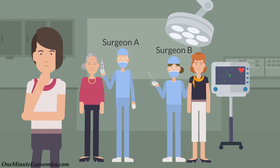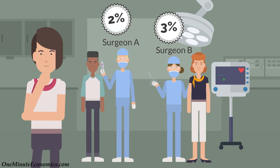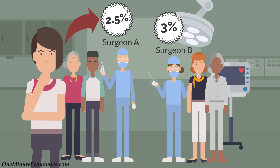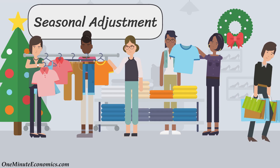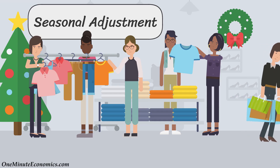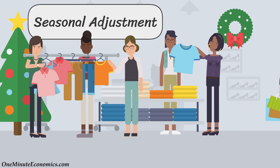What if surgeon B only accepts young patients whereas surgeon A generously accepts anyone? Believe it or not, surgeon A's death rate might actually be lower than surgeon B's for young people, but because he also accepts elderly patients the percentage of deaths goes up. It therefore makes sense to adjust for age, and after doing that you might realize that surgeon A's age-adjusted percentage is actually lower.